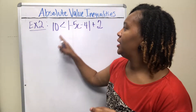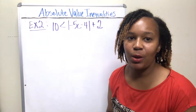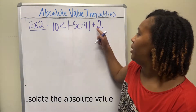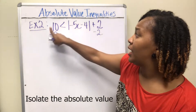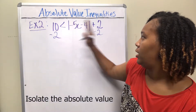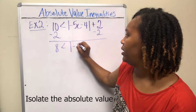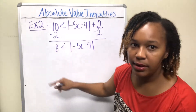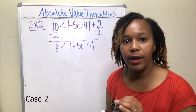Example two: solve 10 < |−5c − 4| + 2. To isolate the absolute value bars, subtract 2 from both sides of the inequality symbol, giving you 8 < |−5c − 4|. Now the absolute value is bigger than a number, so this is case two — create a compound inequality.